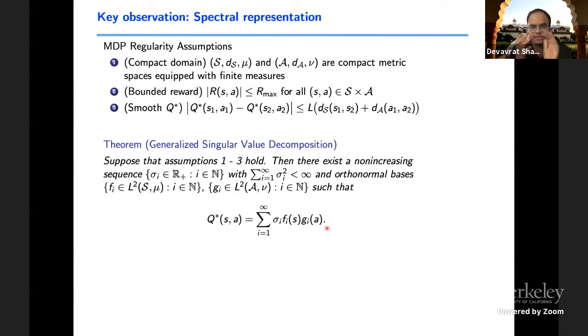Then under these conditions, one can write down a nice, simple, clean singular value decomposition of such Q star, which has a countable representation. The number of components in its representation are countably infinite. Further, the singular values associated with them are square summable, which means that in that sense, energy is always finite. We hope that this result is known in some form somewhere, not necessarily in the context of Q star, but at least in the generalized singular value decomposition sense.